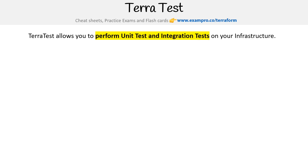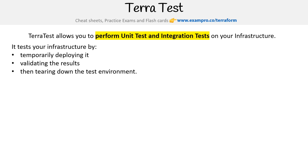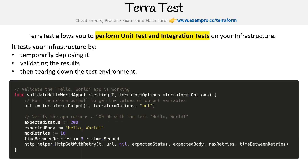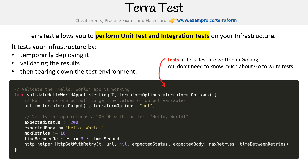Let's take a quick look at Terratest. Terratest allows you to perform unit tests and integration tests on your infrastructure. It tests your infrastructure by temporarily deploying it, validating the results, then tearing down the test environment. Here's an example of what a test function looks like in Terratest — it is written in Golang. Golang can be hard to use, but you don't need to know much about it; you can pretty much copy and paste it and tweak the values to get the result you want.